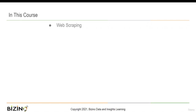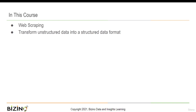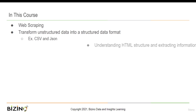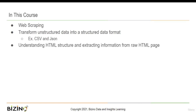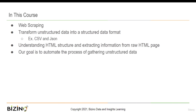In this course, we will talk about web scraping and how to transform unstructured data such as a web page into a structured data format, for example CSV and JSON. How to understand HTML structure and extract useful information from a raw HTML page. Our goal is to automate the process of gathering unstructured data in the form of a web page and transforming it into structured data.